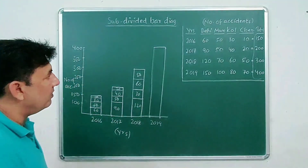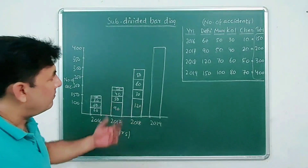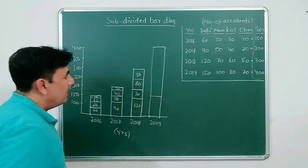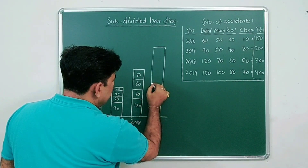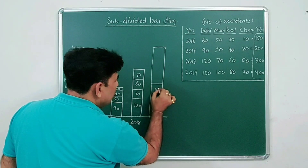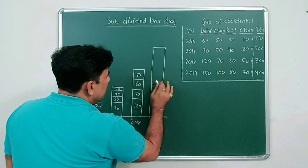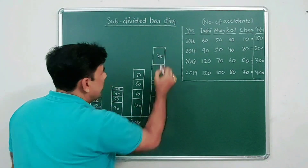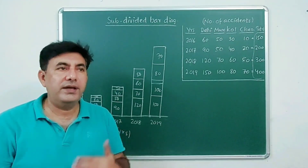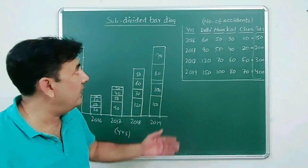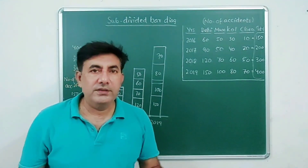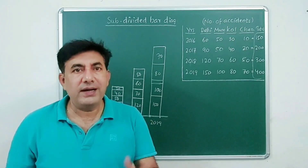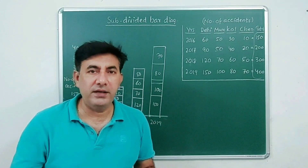In 2019, plot 150 first — it's somewhere here. Then 100 above it, then 80, and finally 70, filling up to 400. You have to divide each bar into the required number of parts and place them according to the question. That's all for this video — I hope you have got a lot of information about bar diagrams. Do practice these questions and see you in the next video. Goodbye, take care!